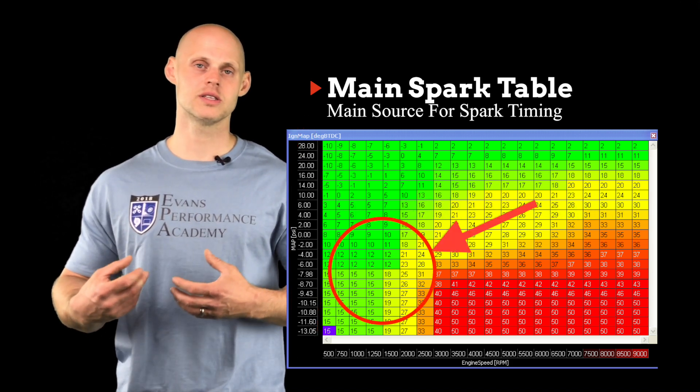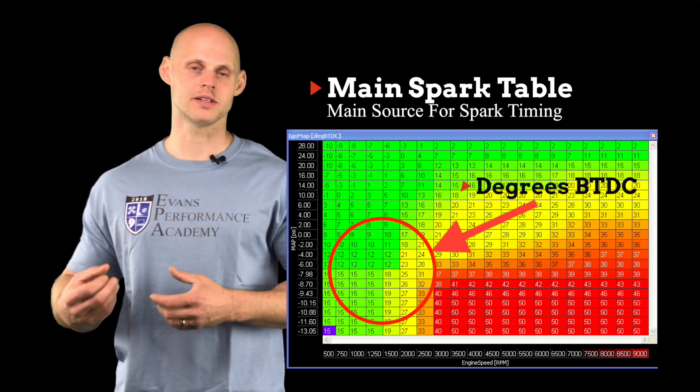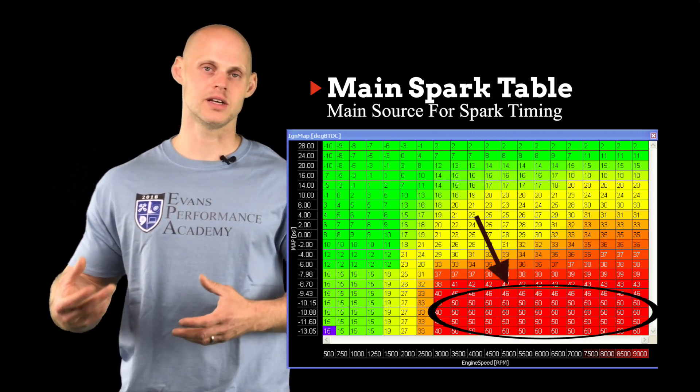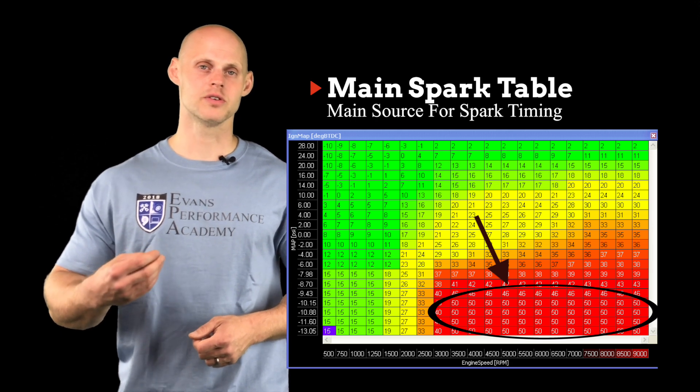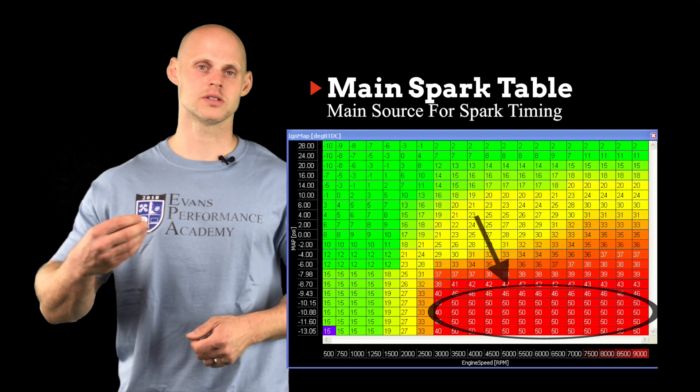Now the values in the table are expressed in degrees of BTDC, before top dead center. So if we find a value of 50 degrees BTDC in our spark timing table, that means that we're going to be firing our spark plug 50 degrees on our compression stroke before the piston reaches top dead center.